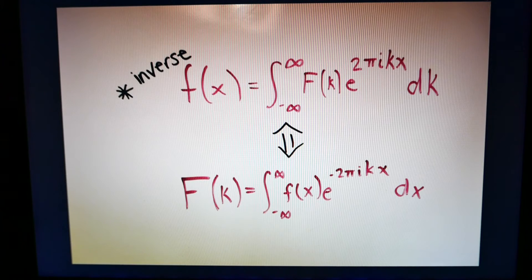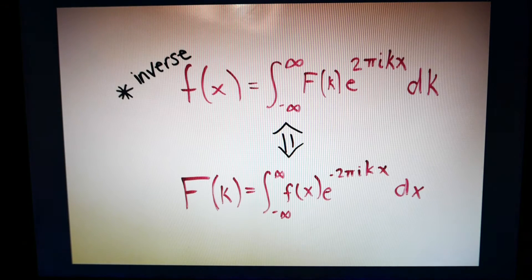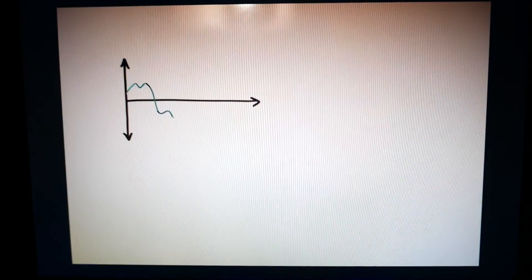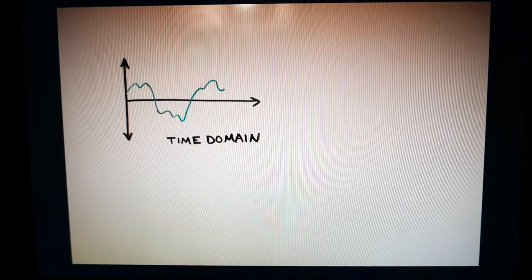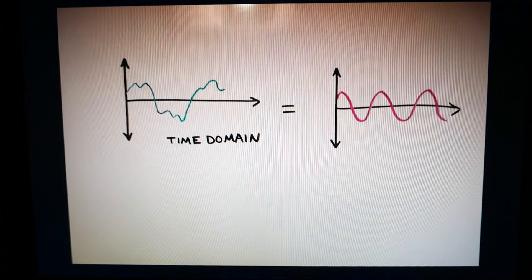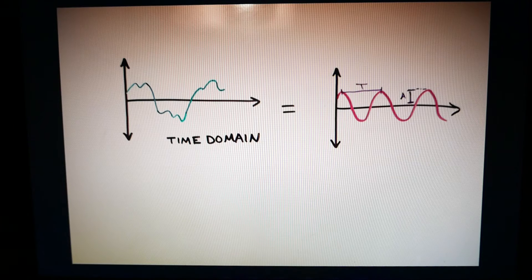Unlike Fourier's earlier Fourier series, the Fourier transform can be used over negative infinity to infinity. Fourier and other mathematicians found that any function in the time domain can be described by a sum of sinusoids, and these sinusoids in turn can be described by their frequency, their amplitude, and their phase.